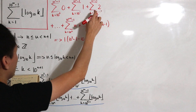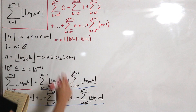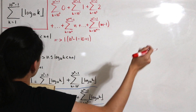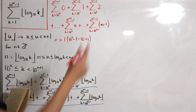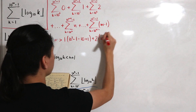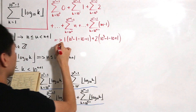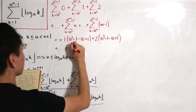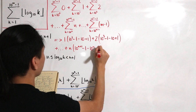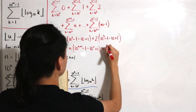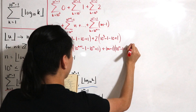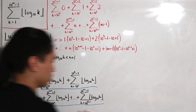For the general nth term we get n × (10^(n+1) − 1 − 10^n + 1) = n × (10^(n+1) − 10^n). For the last term involving m − 1, we get (m−1) × (10^m − 1 − 10^(m−1) + 1) = (m−1) × (10^m − 10^(m−1)). So our whole sum is now written in terms of these products.